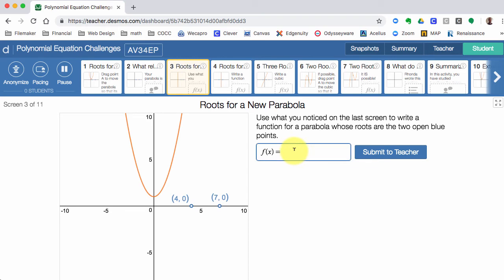We're using the zero product property. If I have x minus 4 and if I put 4 in I get a 0 right there. But then I have another place where there's a 0, so I'm going to have x minus 7. And both of those, if I put those x values in, it's going to make the whole function turn into 0.